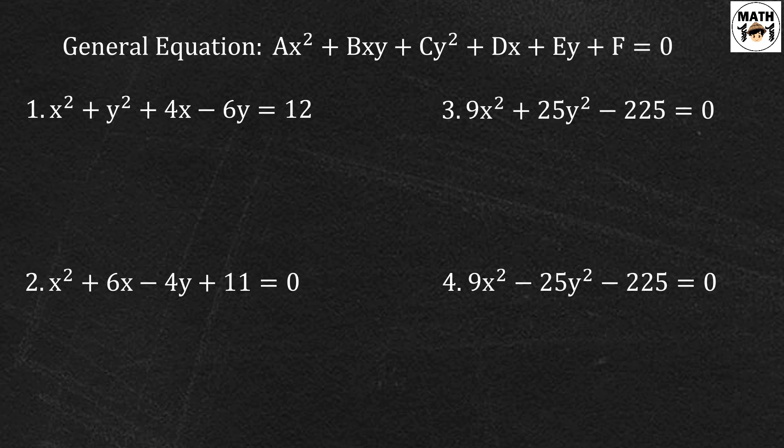So notice na sa bawat equation natin, wala yung term na xy. Therefore, b is equal to zero. So yung i-compare na lang natin is yung coefficient a and coefficient c. Hindi na tayo gagamit ng discriminant. A is the coefficient of x squared and c is the coefficient of y squared.